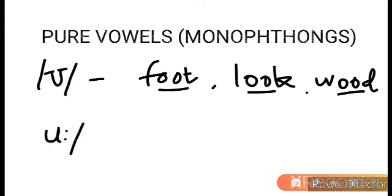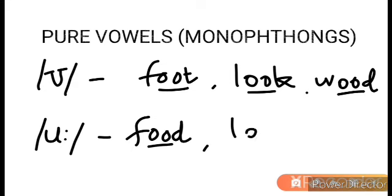The next sound is a little bit longer — /uː/. As in food, loose. You might mispronounce 'football' as 'food-ball', but it is 'foot' with /ʊ/, whereas 'food' has the long /uː/ sound. So /ʊ/ as in foot and /uː/ as in food.